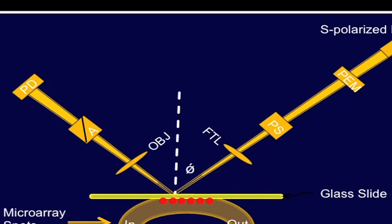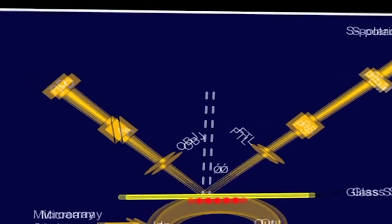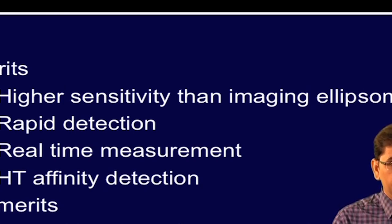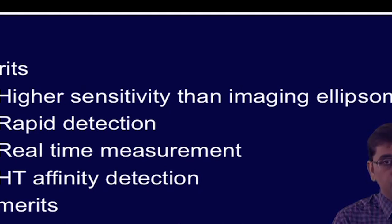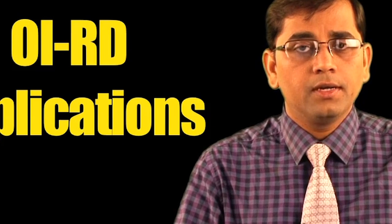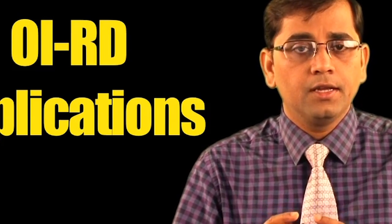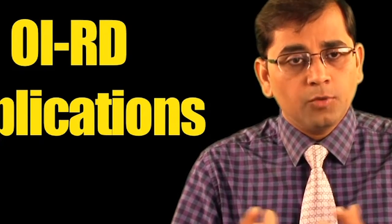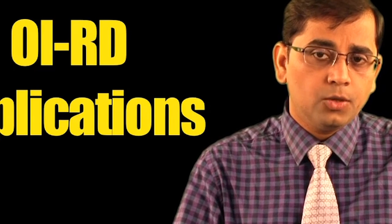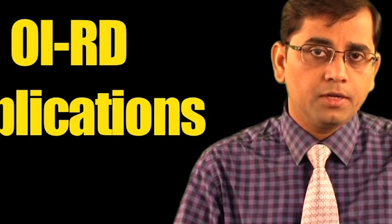The sample is coated on the glass slide, which is directly in contact with the fluidic system. The OIRD platform is more sensitive than imaging ellipsometry. It provides a rapid and high-throughput affinity detection system with real-time measurement and detection, whereas its demerit involves insensitivity to conformational changes. OIRD has been used for various applications — the OIRD microscope has been applied for real-time monitoring of antigen-antibody interactions, nucleic acid hybridization, and protein-small molecule binding reactions.